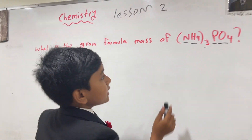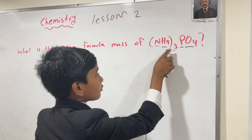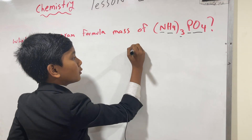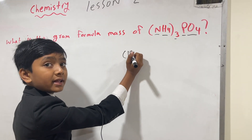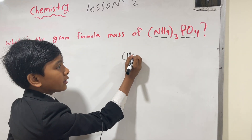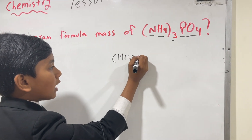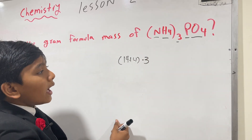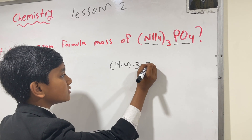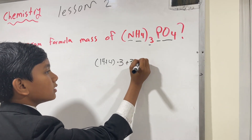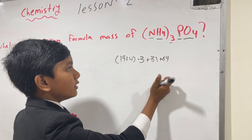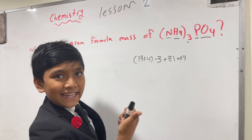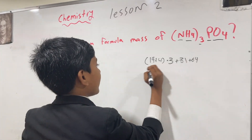Realize that 3 ammoniums means you're going to have the molar mass of nitrogen and the molar mass of hydrogen, which is 1 times 4, times 3 because you have 3 ammoniums. And then plus phosphate, which is 31, plus oxygen, whose 16 times 4 is 64 easily.